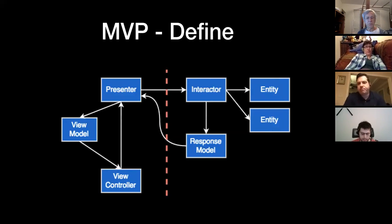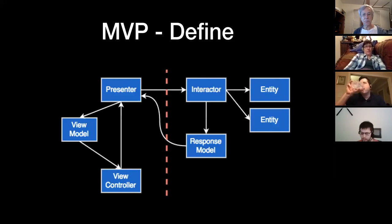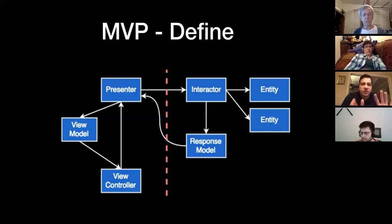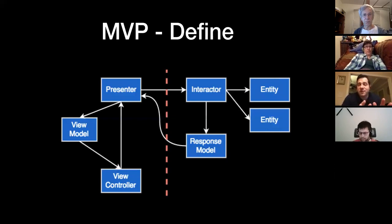My other question — are MVP and MVVM specific to Android? Not at all. Every one of these architectures could be done on the web, on Android, and on iOS. I have done all of them everywhere. iOS, I think they call MVP 'VIPER,' which basically just takes view controllers and adds a router, but it's the same thing. Whether you do it in Swift, Objective-C, Java, or Kotlin, it's the same architecture.